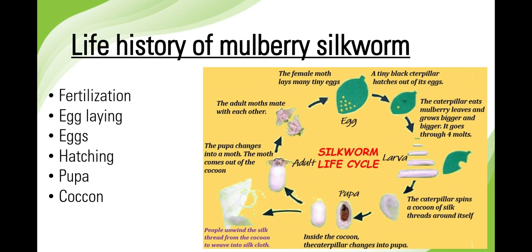The eggs laid by the female moth are rounded and white in color. With the increase in time after laying, the eggs become darker day by day. After 10 days of incubation, the eggs hatch into larvae called caterpillars.